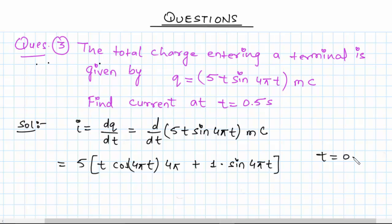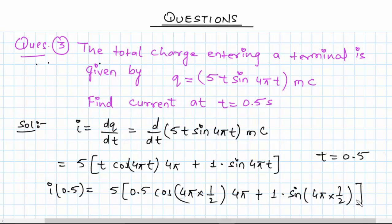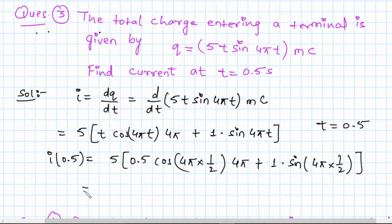Now I will substitute the value of t equals 0.5. This will be i of 0.5 equals 5 times 0.5 times cos of 4 pi times one-half, then 4 pi plus 1 times sine of 4 pi times one-half. We have 2 pi here and also 2 pi here.